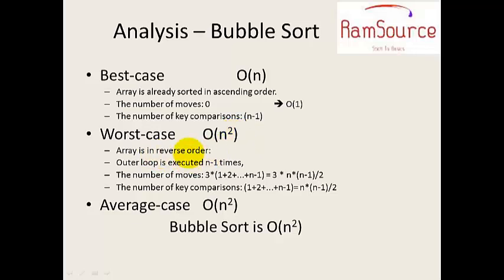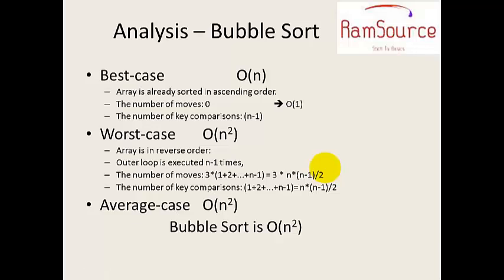In the worst case, if using reverse order (unsorted in descending order), the outer loop executes n-1 times. There are n*(n-1) comparisons and 3 swap statements: t = a, a = b, b = t. So there are 3 * n * (n-1) total operations. Ignoring constants, this gives O(n²). So bubble sort worst case complexity is O(n²).